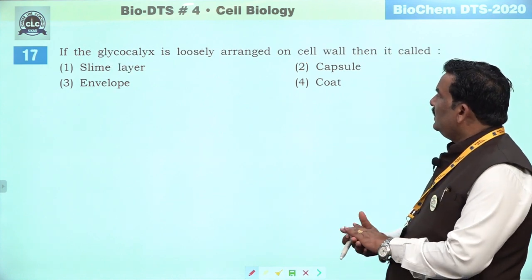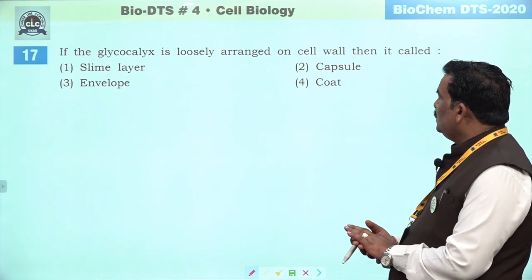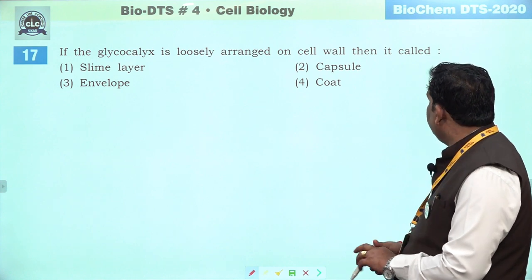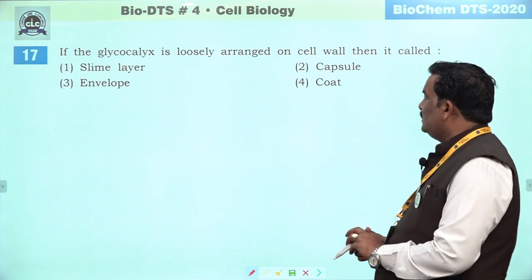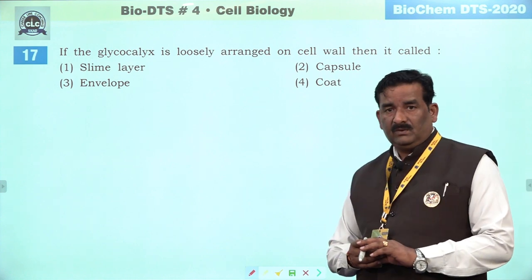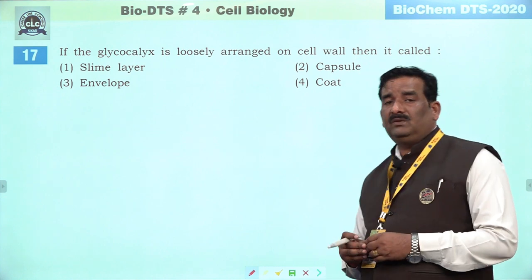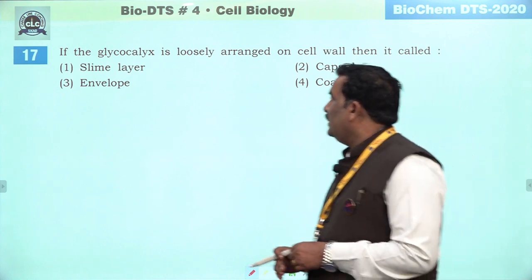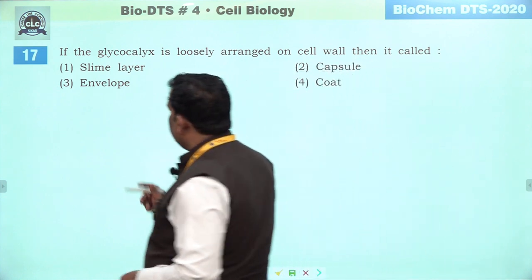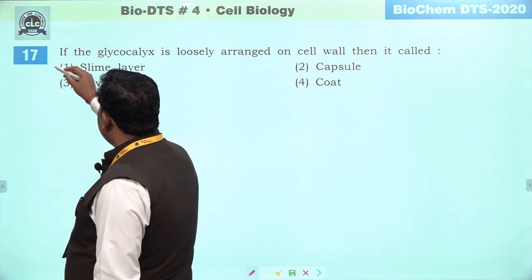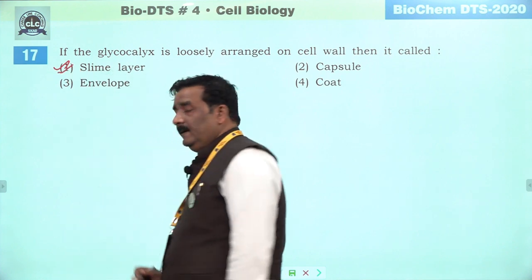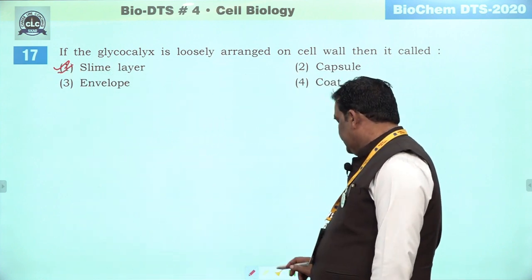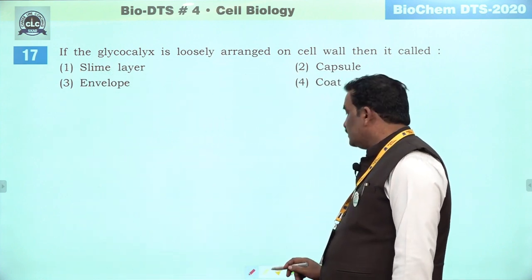Next question: if the glycocalyx is loosely arranged on cell wall, then it is called. Obviously agar yeh tightly arranged hota hai toh ham ise capsule kehte hain. Aur jab loosely arranged hota hai toh ham ise slime layer kehte hain. First is the right answer.